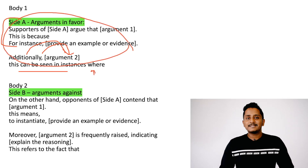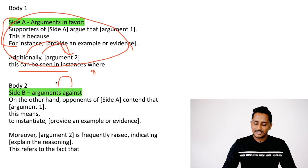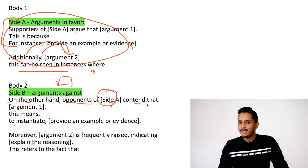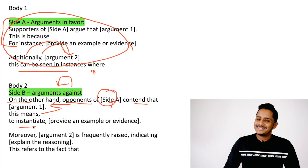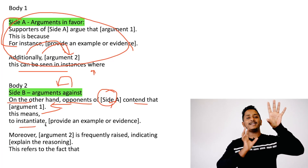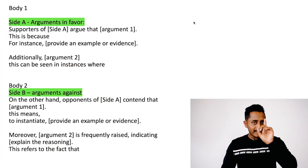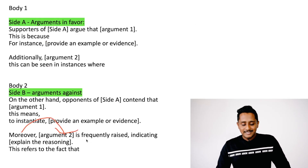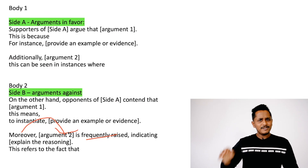That covers Side A — the arguments in favor. Now for Side B, 'On the other hand, opponents of...' — write the topic — '...contend that...' — write the main idea against it. Same structure: main idea, supporting idea, and example. Then if you have one more idea, write 'Moreover...' to add a second argument against. This is not mandatory — one idea is enough.